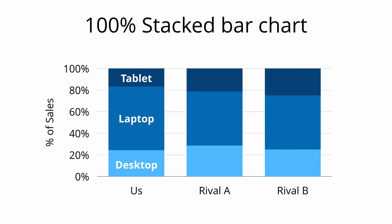We can transform the previous stacked bar into a 100% stacked bar. Instead of the y-axis being sales in dollars, the y-axis is now sales as a percentage of total sales for that company. The x-axis still represents the company, and the dark blue, blue, and light blue segments still represent products. The advantage is that you can easily compare the relative proportion of sales of one product among companies. Rival A has the highest proportion of sales from desktops, and rival B has the highest proportion from tablets.